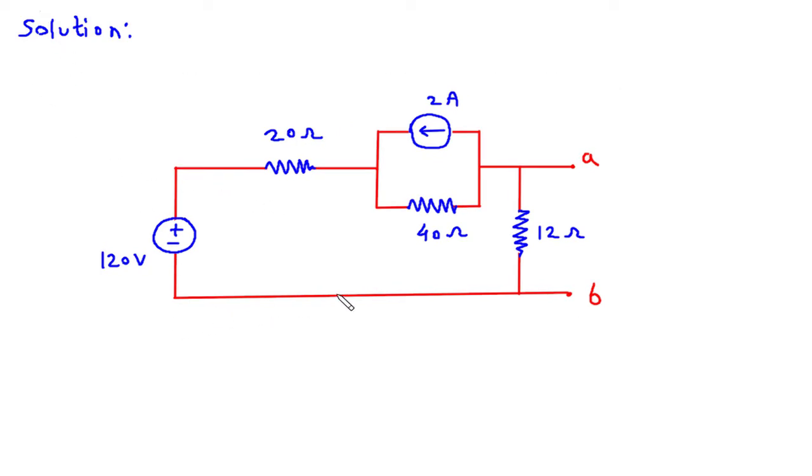Now we will find RN which is Norton's resistance and IN which is Norton's current. So to find, first we will find RN.